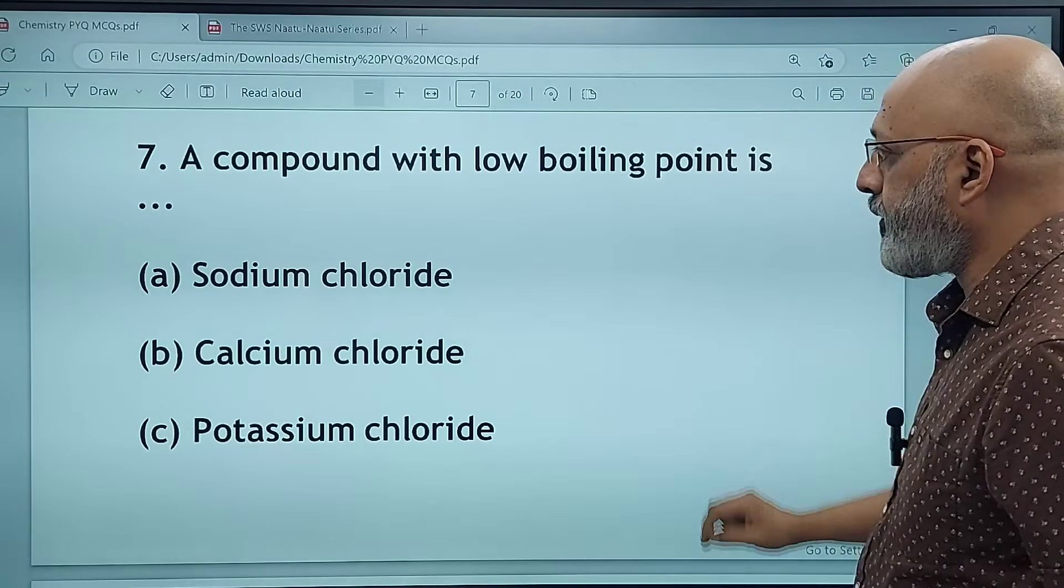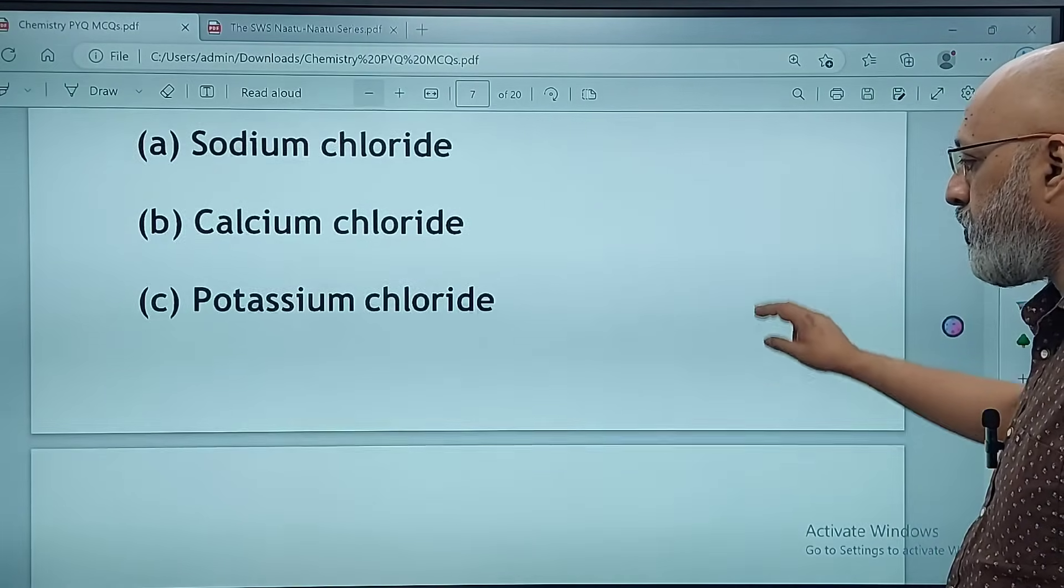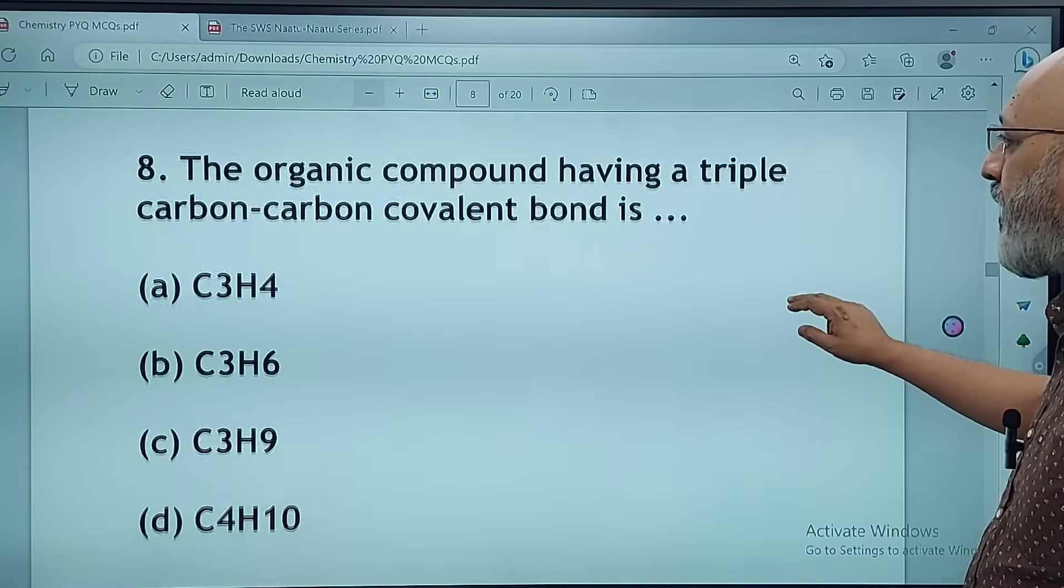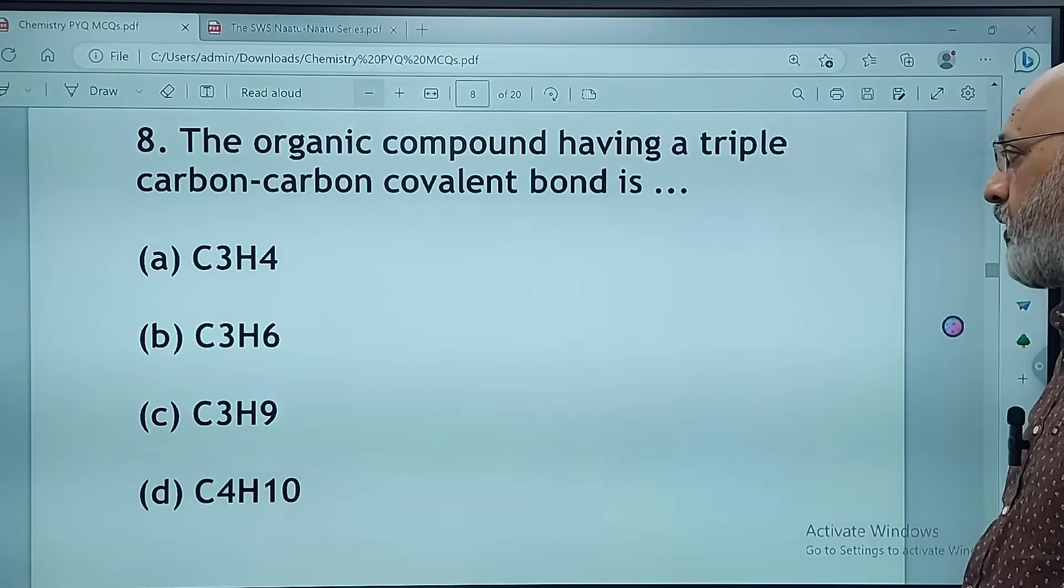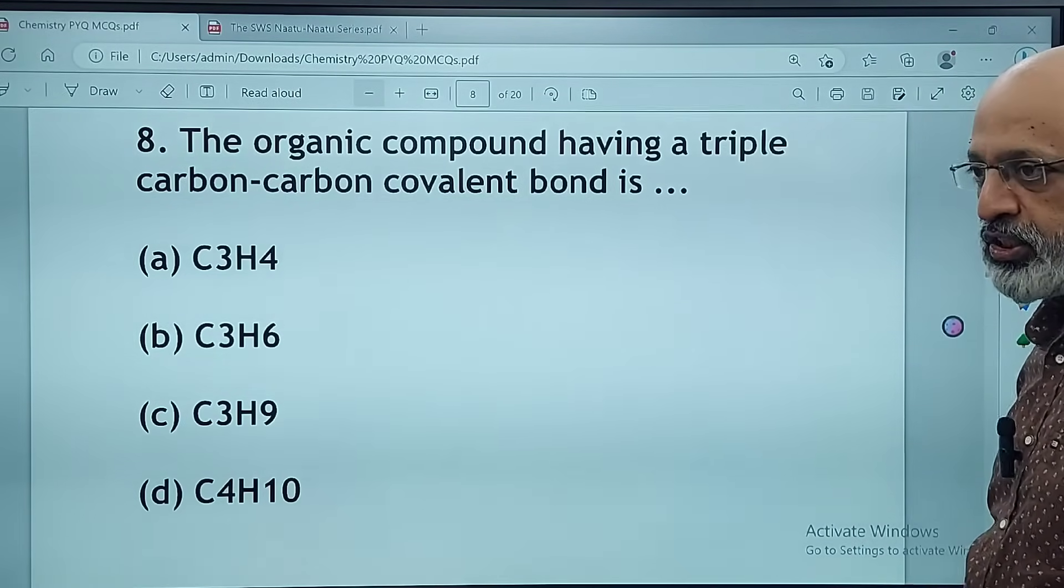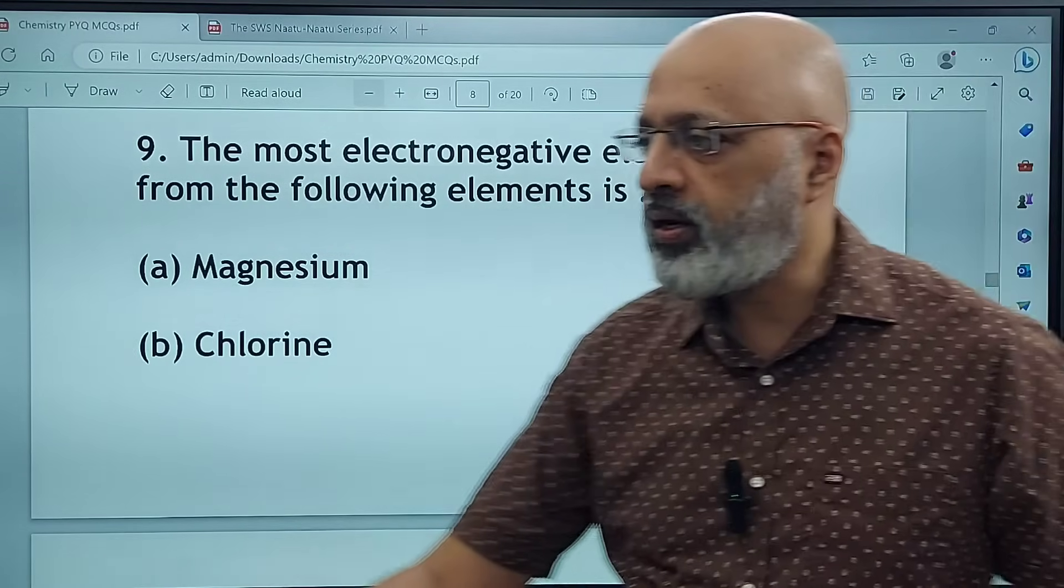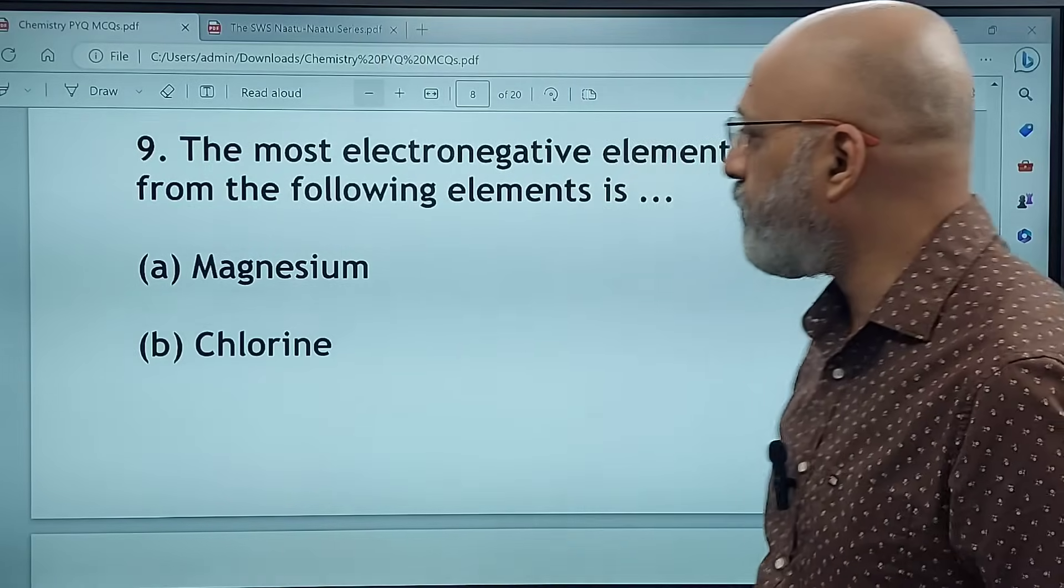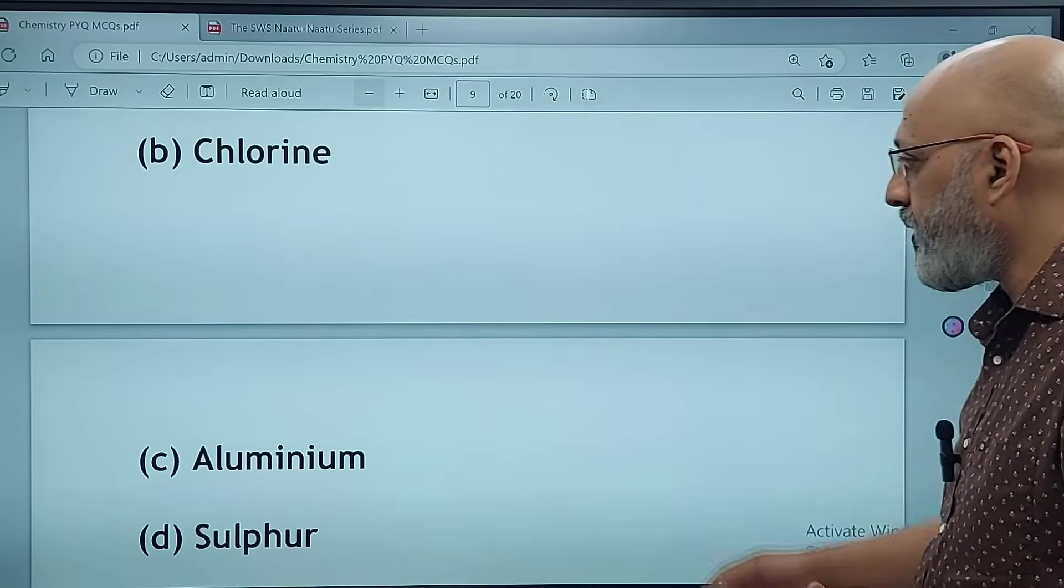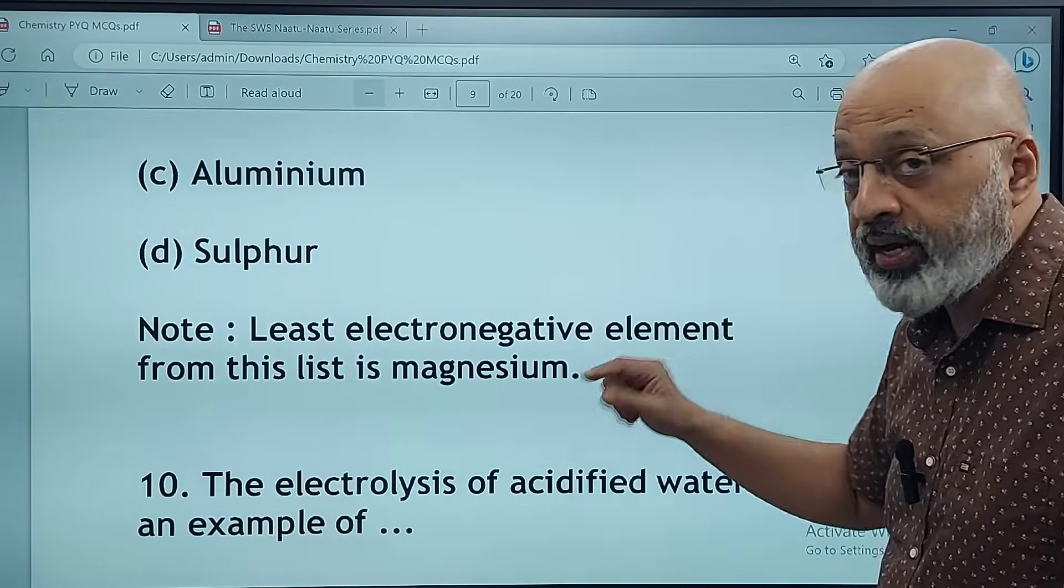A compound with low boiling point is sodium chloride, calcium chloride, potassium chloride, or carbon tetrachloride. The correct option is D, carbon tetrachloride. The organic compound having a triple carbon-carbon covalent bond is C3H4, C3H6, C3H9, or C4H10. The correct answer is A, C3H4. The most electronegative element from magnesium, chlorine, aluminum, or sulfur is B, chlorine.